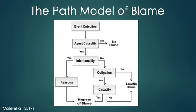Warrant is a supporting reason for the attribution that indicates why a person deserves the evaluation. Malley and colleagues present after this list of specs their opus: the Path Model of Blame. We're going to walk through it step by step.